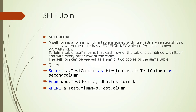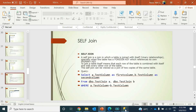Self join is a join where a table is joined with itself — a unary relationship — especially when a table has a foreign key which is referenced by its own primary key. To join a table with itself we make it an alias. For example, we have test_join aliased as 'a' and again test_join aliased as 'b', where the condition is a.test_column equals b.test_column. That's why it's called a self join — we are combining rows from the same table by giving it two different aliases.